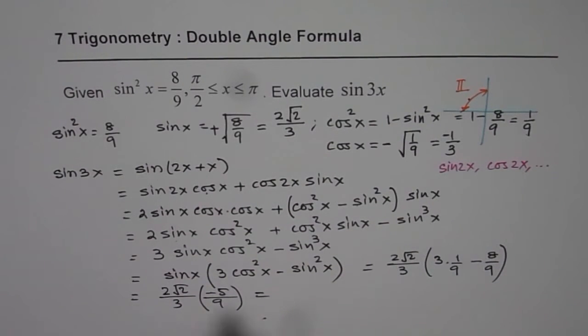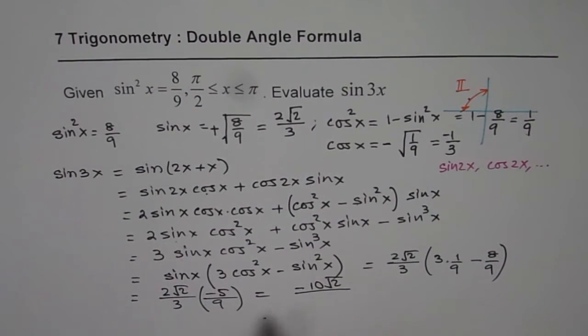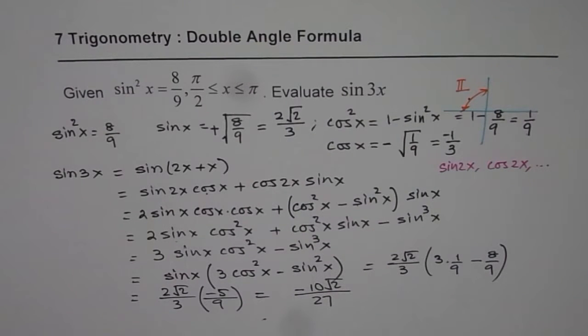And when we open this bracket, we get -10√2 over 9 times 3 is 27. So that is the value, the exact value for sin 3x. That is how we can get it.